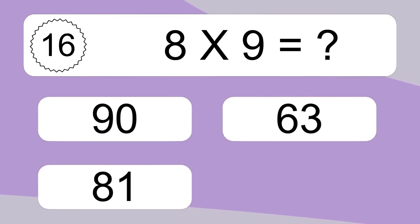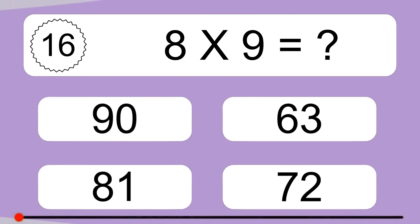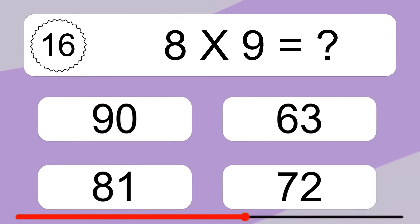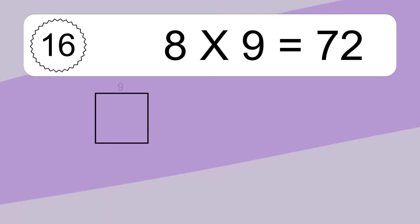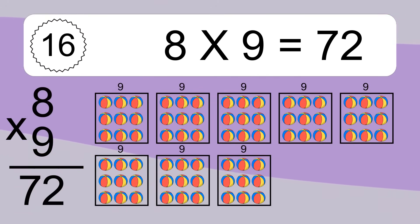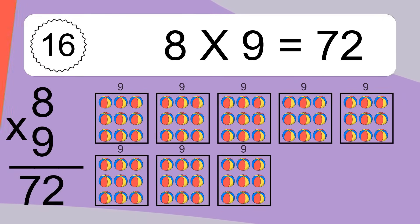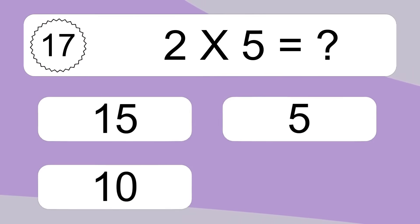8 times 9 equals what? 8 times 9 equals 72. We have 8 boxes, and each box has 9 colorful balls inside. If you count all the balls in all the boxes together, you will have 8 times 9 balls. This equals 72 balls. 2 times 5 equals what?